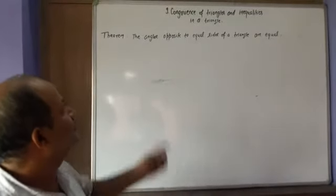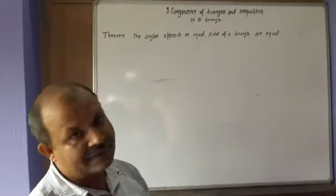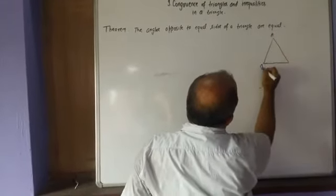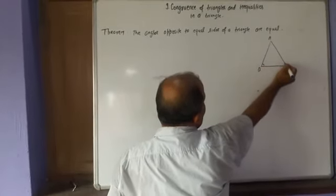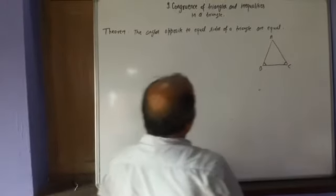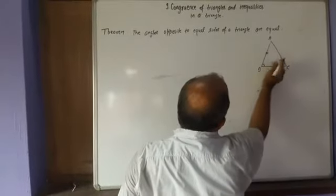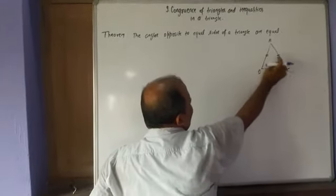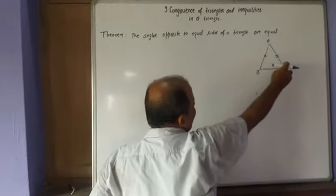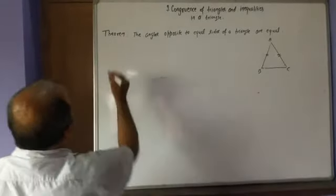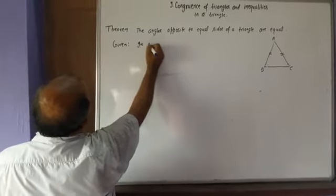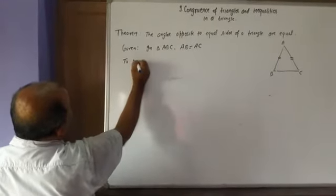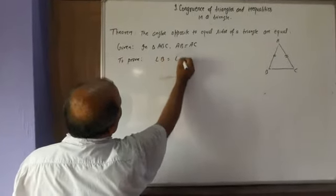Now we have to prove a theorem: the angles opposite to equal sides of a triangle are equal. Look at triangle ABC. Given that AB equals AC, we have to prove that angle B equals angle C — that is, the angles opposite the equal sides are equal.